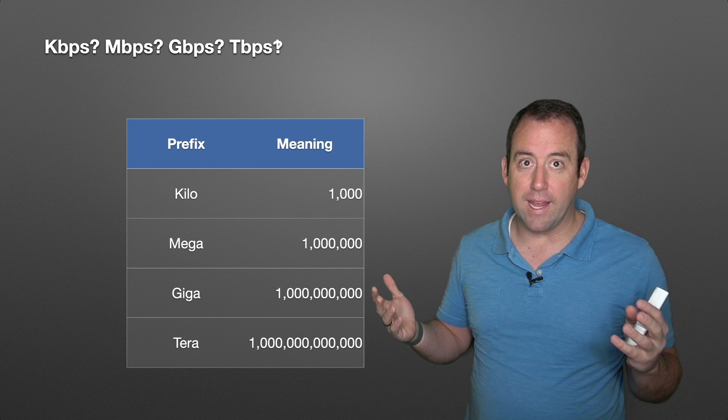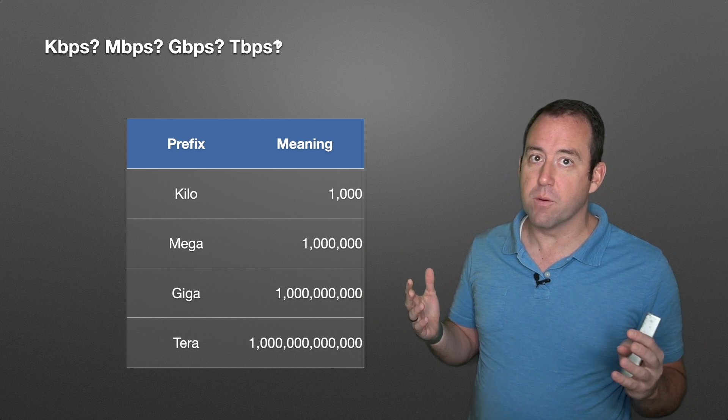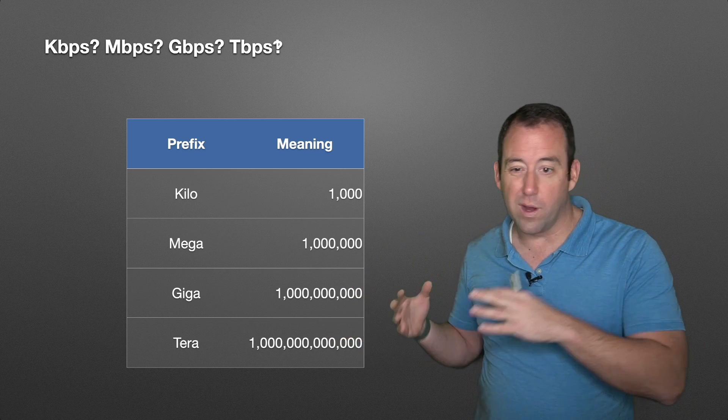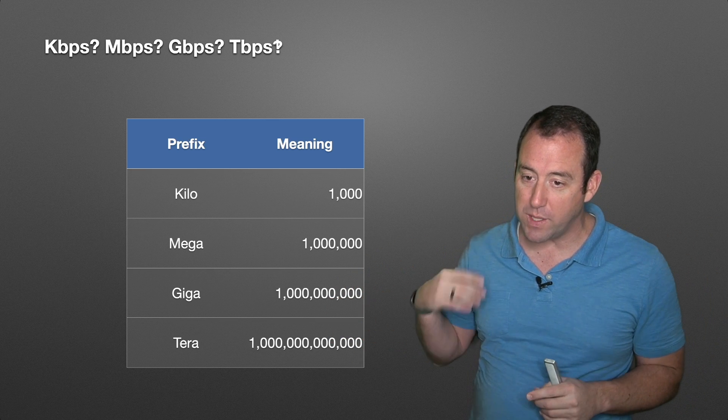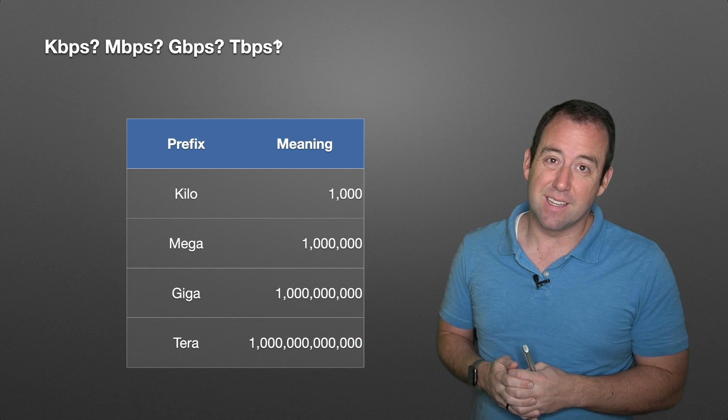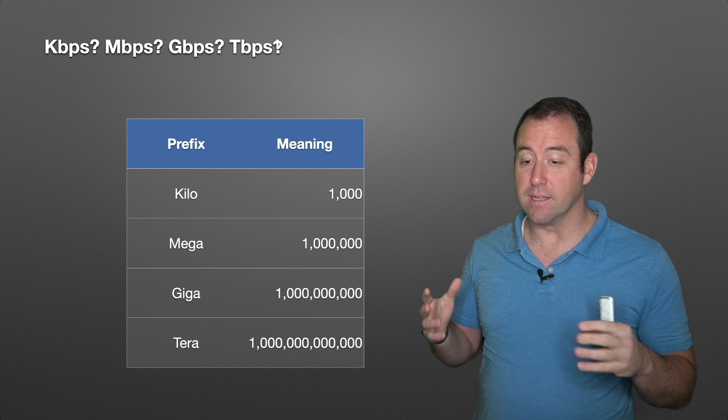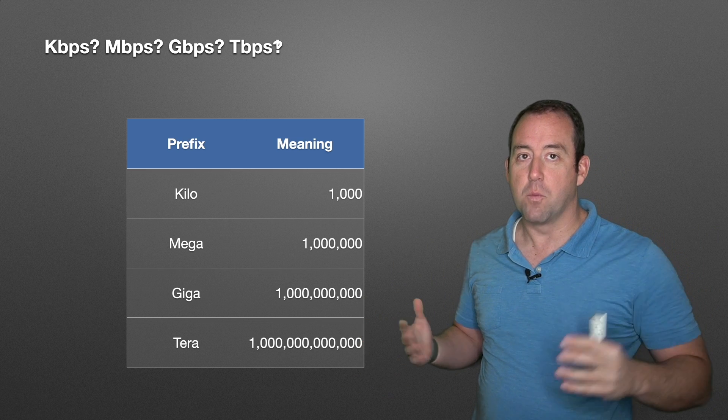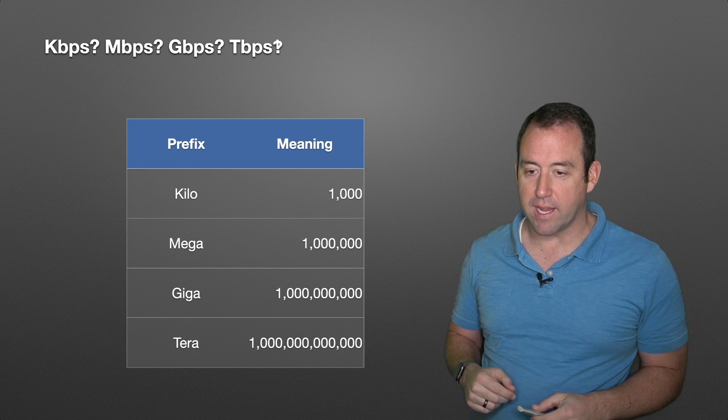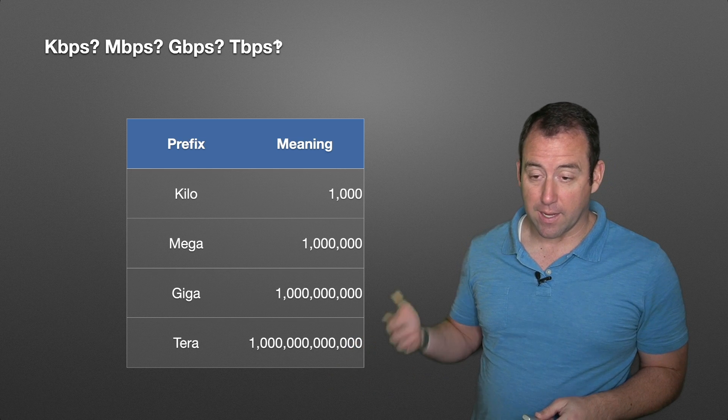Gigabits per second, what we're looking at today in terms of modern network speeds are typically in the 1 to 10 to maybe 100 gigabit per second speeds. That is billions of bits per second. Billions of those changes in signals. And finally, theoretically somewhere down the line, we're going to be looking at terabits per second or trillions of bits per second.